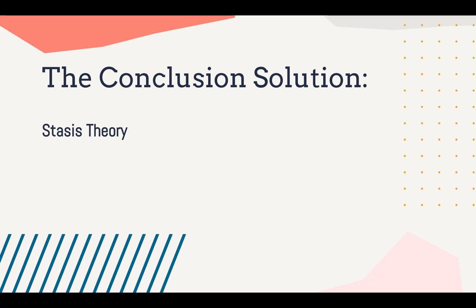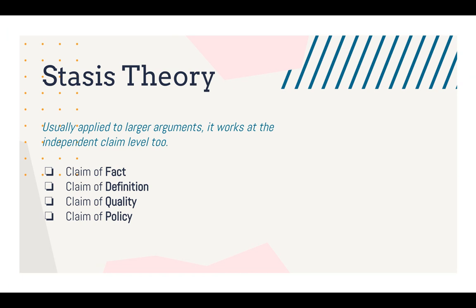So what's the solution when your students ask, what do I do? I think it is stasis theory, which we can attribute to Hermagoras — one of Aristotle's near-contemporaries, another ancient Greek rhetor. Hermagoras came up with this originally, and it essentially argues that every argument addresses a key question at issue. In most textbooks it's applied only to larger arguments, so I think a lot of teachers and students struggle to find a practical application for it. But I think we can use it at the claim level to really help us, particularly with conclusions.